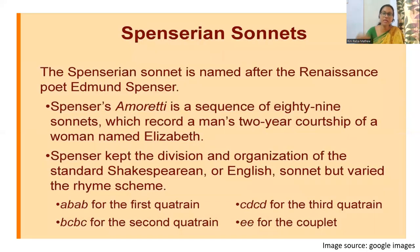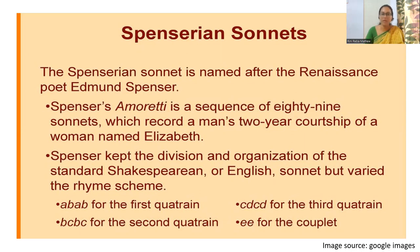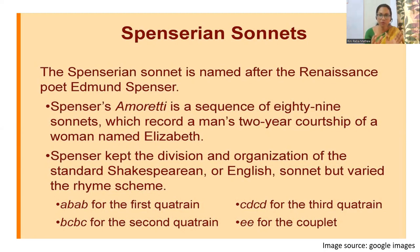Coming to the variant within English sonnet: we have the Italian sonnet, which we call Petrarchan, and the English sonnet is divided into Shakespearean and Spenserian. The Spenserian sonnet was popularized by the Renaissance poet Edmund Spenser. Spenser's 'Amoretti' is a sequence of 89 sonnets recording a man's two-year courtship of a woman named Elizabeth. Spenser kept the same division and organization as the standard Shakespearean or English sonnet, but changed the rhyme scheme.